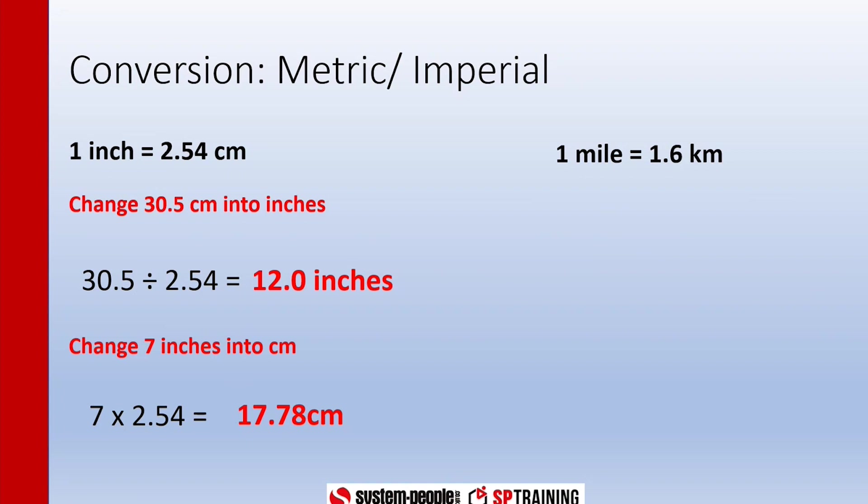You'll always be given that conversion factor. We've got to change 24 kilometers into miles. So to do this we look at the same sort of thing: we're taking our kilometers and we're dividing it by the kilometer. So it'd be 24 divided by 1.6, which is 15 miles. So 24 kilometers is 15 miles.